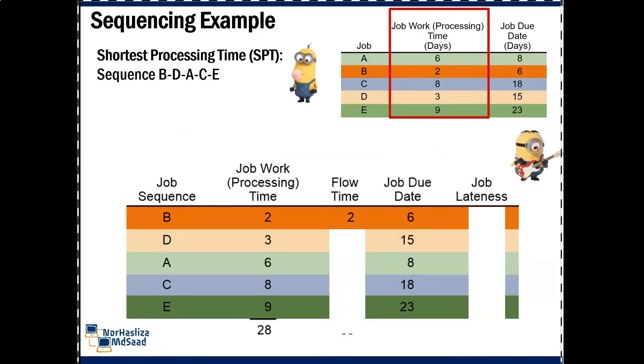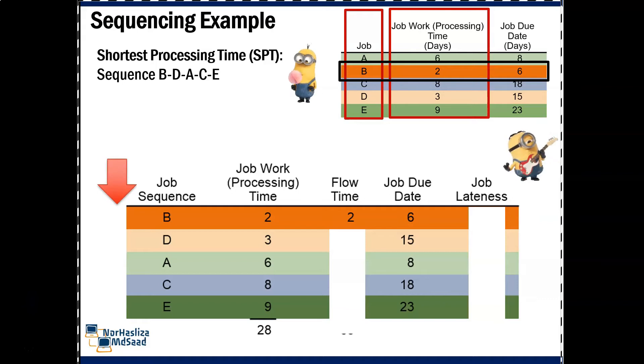To find the sequence of shortest processing time, we need to look at the column job work processing time and find the lowest day, and then we can rearrange the job sequence. For this example, the shortest job time is B, which is 2. The sequence is B, D, A, C, and E.